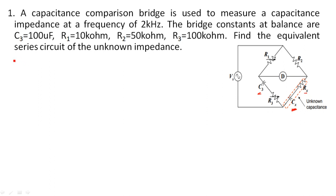In DC bridges we don't worry about frequency because the input is a DC supply and all components form a pure resistor network. But here the input is an AC supply, and some components in the circuit are frequency-dependent — like capacitance and inductance. In this case, C3 and Cx are the frequency-dependent components, which is why frequency must be specified in AC bridges.